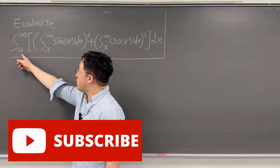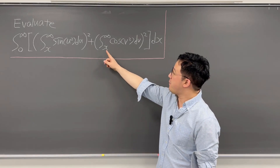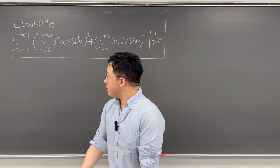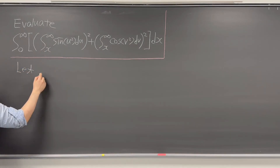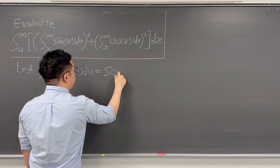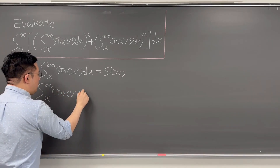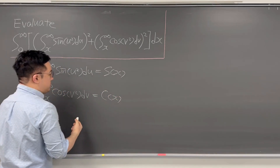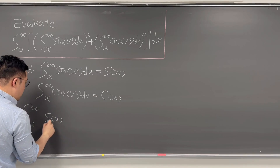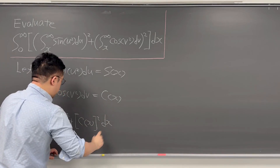Here's the question: evaluate this integral from 0 to infinity. We have the integral from x to infinity of sine(u²) du, squared, plus another integral from x to infinity of cosine(v²) dv, squared, and then dx. Since we have two different integrals inside, I'll call the first one S(x) — the integral from x to infinity of sine(u²) du — and the second one C(x) — the integral from x to infinity of cosine(v²) dv. So what we need to evaluate is the integral from 0 to infinity of S(x)² + C(x)² dx.